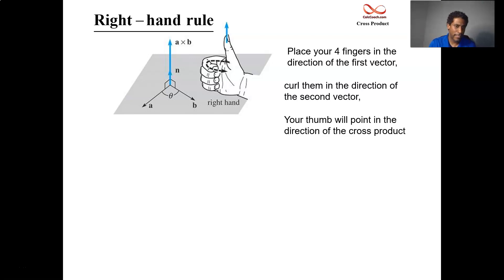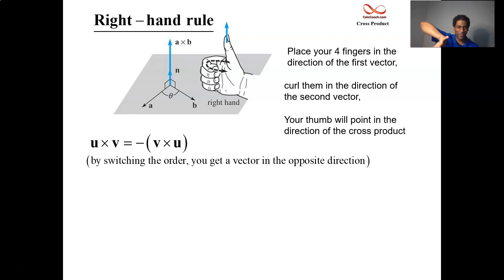In particular, we can use this to figure out why when we cross in the other order, it points in the other direction. By switching the order, you get the opposite direction. It's kind of hard to do, but you can do it. Try it out. Put your fingers along B, curl them in the direction of A. It hurts your arm, but you'll see that your thumb is now pointing downward. B cross A is minus N, while A cross B is N. All right. The right hand rule.